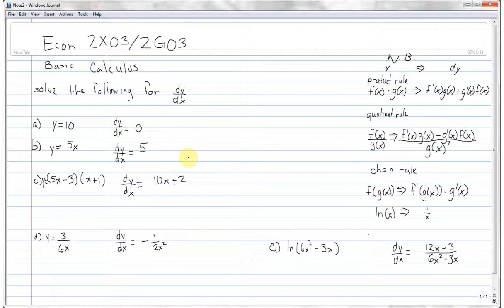Okay, so C is a case of product rule. Of course, you can expand this out and take a derivative. You'll get the same answer. So, y equals 5x minus 3 times x plus 1. Right, so we go to the product rule. We take the derivative of the first term times the second term, which is, derivative of the first term is 5 times x plus 1.